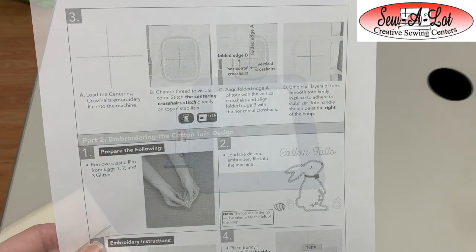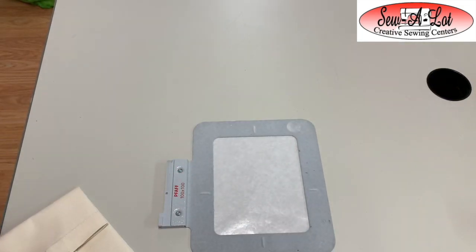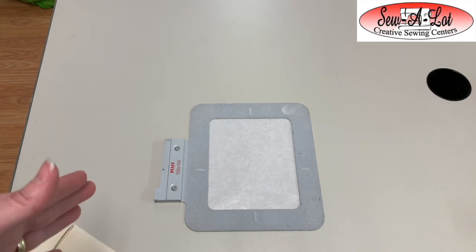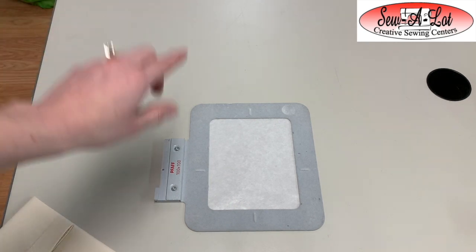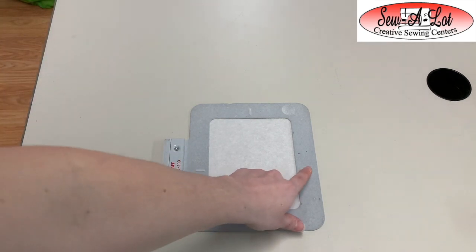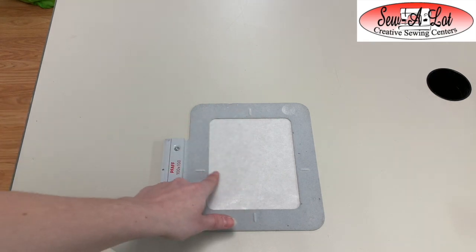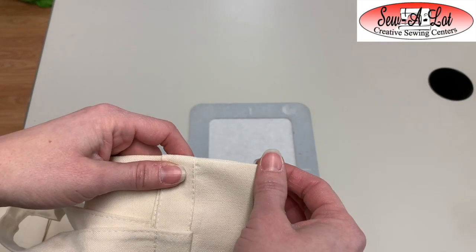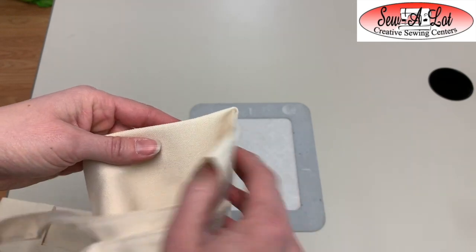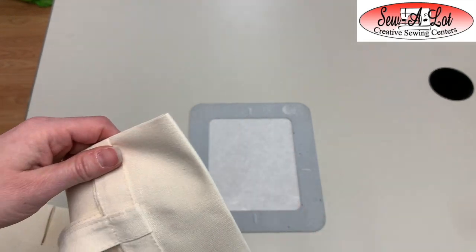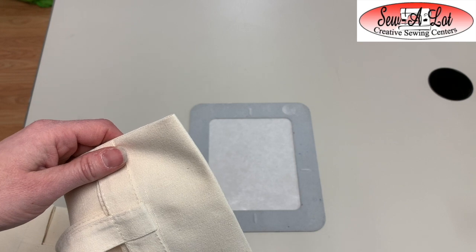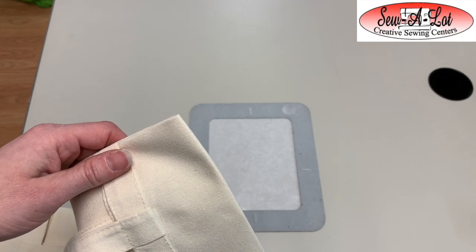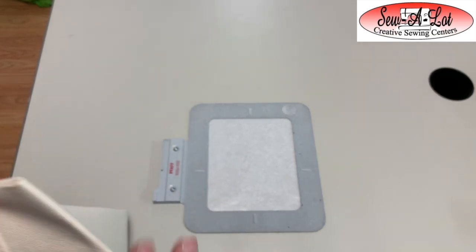Now that I have my hoop ready with the stabilizer in it, whether I have a metal hoop or a standard hoop, they all have hoop markings so that I know where the center of my hoop is. I'm going to go ahead - I've created my center by creating the folds here - so I'm going to skip the step where I stitch the crosshair right onto my stabilizer for this first hooping, and I'm going to show you how to do it without that.